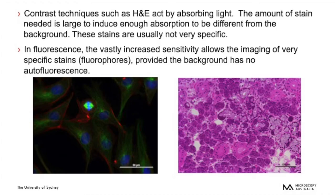For many hundreds of years, transmission light microscopy was used to observe biological specimens and a huge amount of scientific knowledge was gained. Today, contrast techniques are still very valid and valuable, with pathologists using contrast stains as shown on this slide. However, as you can see in this comparison, fluorescence vastly increases the sensitivity, allowing more specific staining of proteins and organelles. The contrast techniques act by absorbing light, while in fluorescence we collect emitted light. It is much easier to detect emission of light than absorption of light — a dark-adapted human eye can detect tens of thousands of photons per second, but the same eye struggles to distinguish a 1% difference in absorption.